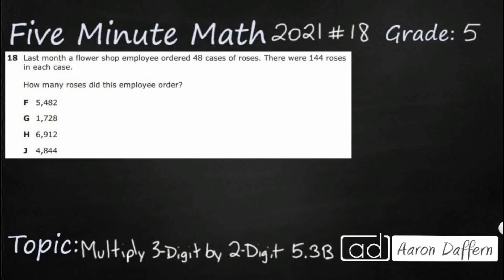Hello and welcome to 5-Minute Math. Today we are looking at the 5th grade concept of multiplying three-digit by two-digit numbers. This is standard 5.3B in the great state of Texas and we are using item number 18 of the 2021 released STAAR test.